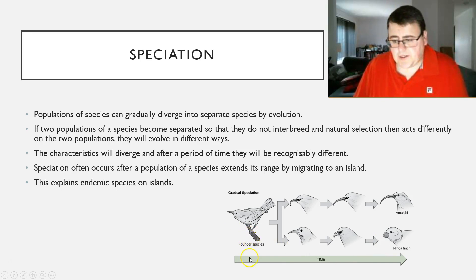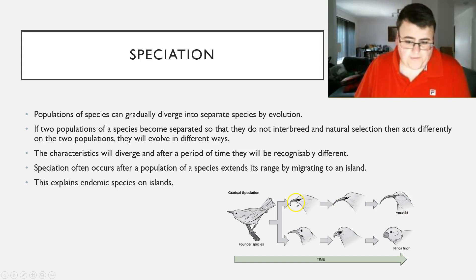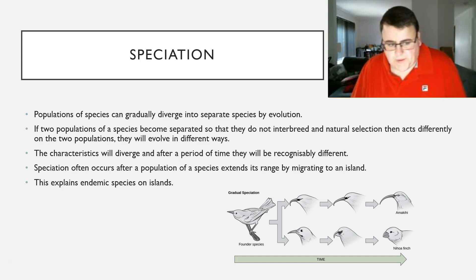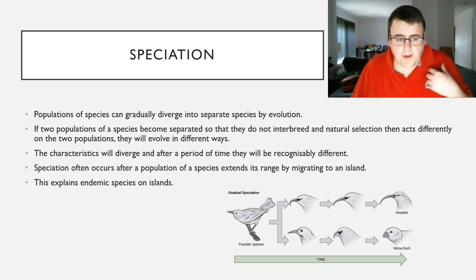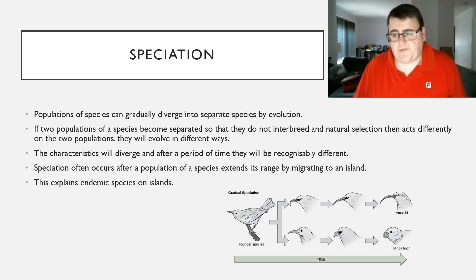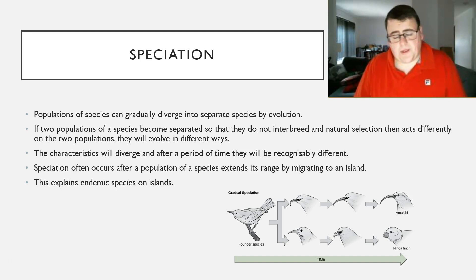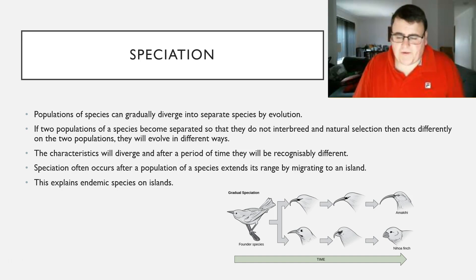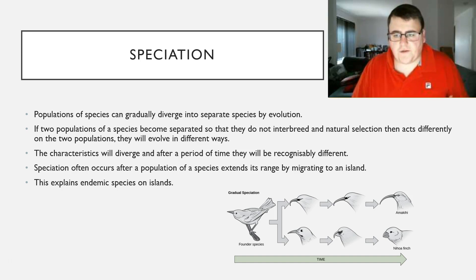Over here we have our founder species turning into the Nihua finch and the Amakia. Basically, speciation is just populations gradually diverging from each other into separate species through the process of evolution or natural selection. That occurs because when two populations of a species become separated, they physically can't interbreed, and natural selection will then act upon them in different ways based on the area they're part of. This is what Darwin saw when he was going through the Galapagos Islands — he was looking at Darwin's finches and noticed they were very similar except they had different beaks, which was a form of speciation. They'd been separated onto different islands, evolved independently, and obtained different beaks based on the food available, and consequently became brand new species.